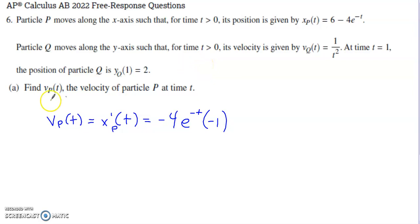In part A, we're asked to deal with particle P. Find the velocity function for particle P as a function of T. As long as you recognize this is a position function and velocity is the rate of change of position, or that velocity is the derivative of position, it's just a matter of taking a derivative of this position function.